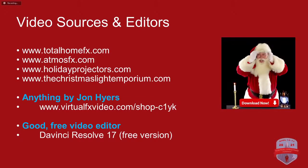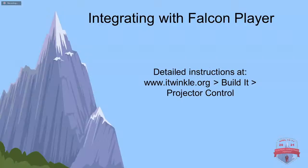Now for the technical part of getting this working in Falcon Player and xLights. If you want full details, visit itwinkle.org and go to the Build It menu, then the Projector Control submenu — it details all the steps beyond what this session covers. Falcon Player has a plugin called Projector Control that you can download directly from the Falcon Player menu. You'll need a nine-pin serial cable running between your Raspberry Pi and projector, along with a USB-to-serial adapter.